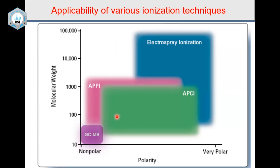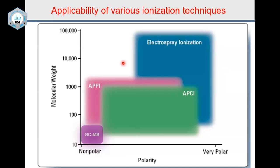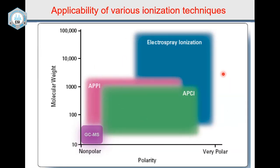Mid-polar and high-polar compounds — many of which are non-volatile or thermally unstable — require another method, and that is where HPLC becomes very useful. All that area you will be using HPLC and LC-MS. What you see here — APPI, electrospray, APCI, etc. — this is the LC-MS domain. Today I will concentrate on GC-MS, the volatile samples, where you want to get the structure of your molecule.